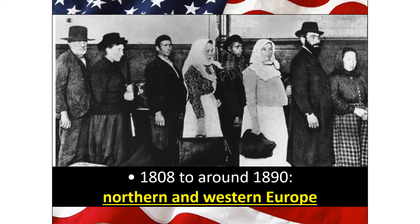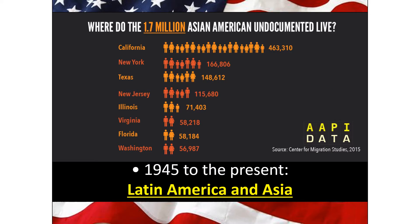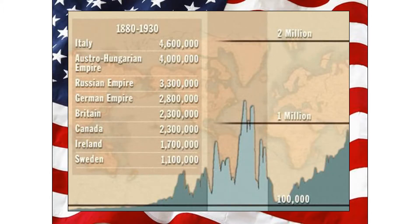The first big wave of European migrants came from Northern and Western Europe — countries like the UK, Germany, and France. Since about 1950, Europeans haven't left Europe much because it is now highly developed and population growth has slowed. Instead, since 1950, we've seen Latin American and Asian immigrants to the US. Between 1880 and 1930, major immigrant sources included Italy, the Austro-Hungarian Empire, Russia, England, Canada, Ireland, and Sweden.